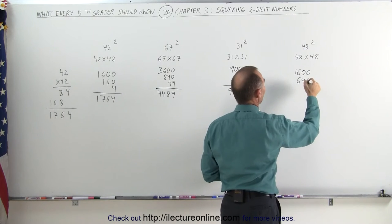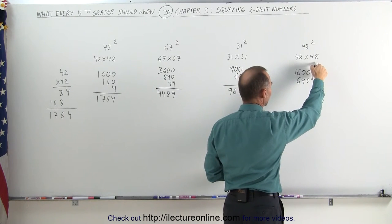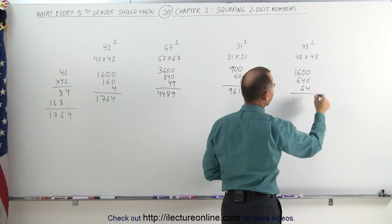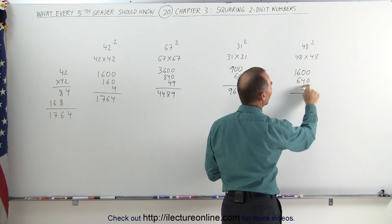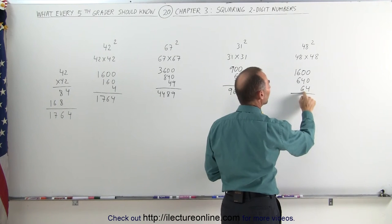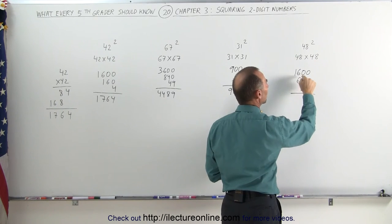Add that here. And then finally, 8 times 8 is 64. Add 64. Notice that if I don't add the 4 for now, 640 plus 60 is 700. 700 plus 1600 is 2300. Add 4 is 2304.